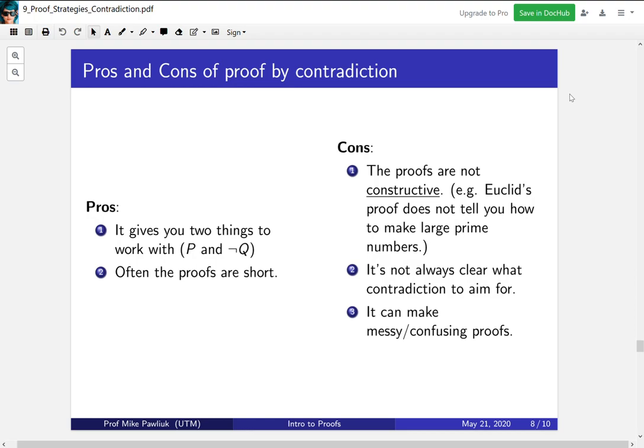The second is that it's not always clear what contradiction you should be aiming for. So you're trying to construct a contradiction, but sometimes you end up just spinning your wheels trying to find something to contradict, and this can make for some messy or confusing proofs.